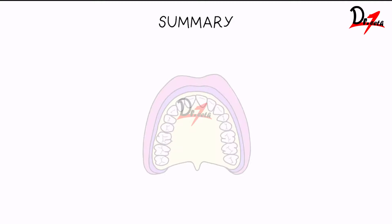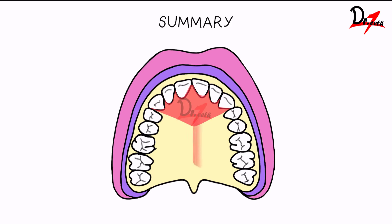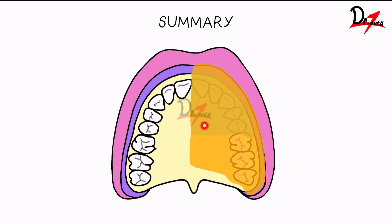Let's have a quick summary. The infraorbital nerve block covers the incisors up to the mesobuccal root of the first molar. The PSA nerve block covers the posterior region except the mesobuccal root — so to extract the first molar you combine blocks or use the MSA. The palatal nerve blocks include the nasopalatine and the greater palatine nerve blocks. The AMSA nerve block numbs the anterior teeth, premolars, and the associated palatal and buccal surfaces. The maxillary nerve block covers the maximum area: hard palate, soft palate, buccal surface, all teeth, and also the lower eyelid, side of the nose, and upper lip.